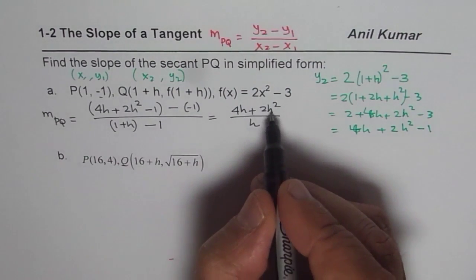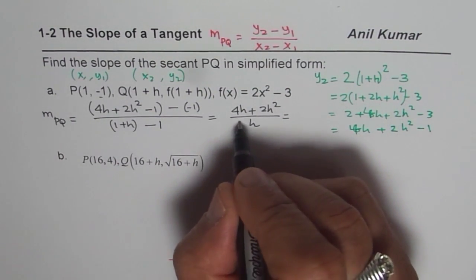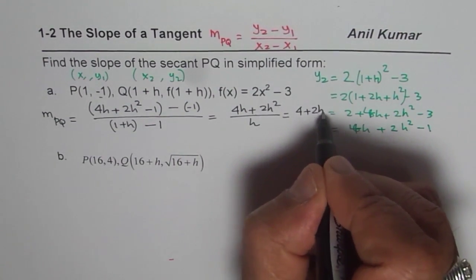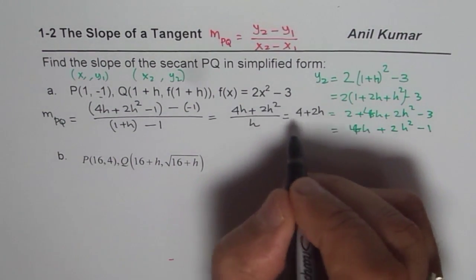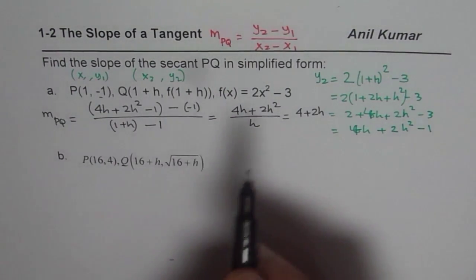Now you can simplify, taking h common, what you get here is 4+2h. So that is the simplified form of PQ, the slope of the secant.